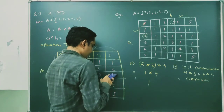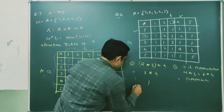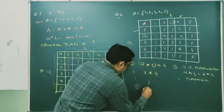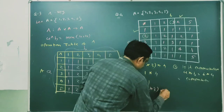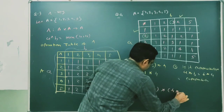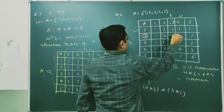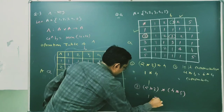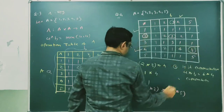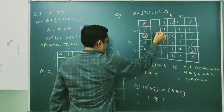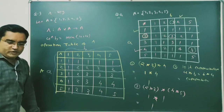Third part: compute (2★3)★(4★5). First, 2★3 = 1 from the table. Then 4★5 = 1 from the table. Finally, 1★1 = 1. So the result of (2★3)★(4★5) is 1. This completes the solution of question number 4.